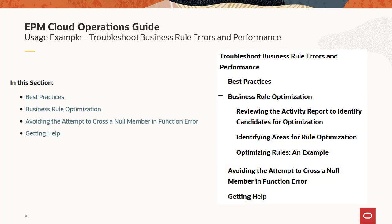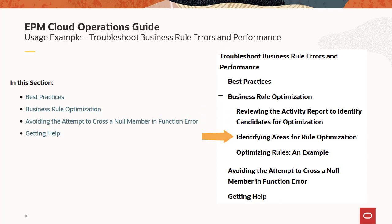As an example, if you have a business rule performance issue, you can go to the section on troubleshooting business rule errors and performance. We start with best practices for designing business rules, then give an example of how to optimize them — first by reviewing the activity report to identify optimization candidates, then with step-by-step instructions for going into Calculation Manager to identify areas for rule optimization, along with examples and related information like avoiding the 'attempt to cross a null membrane' function error. If you still cannot resolve it, the 'Getting Help' section specifies exactly what information we need.